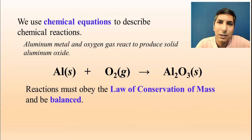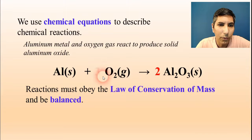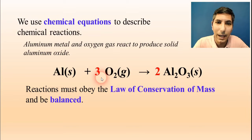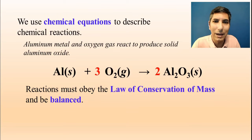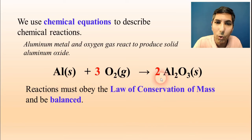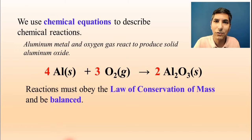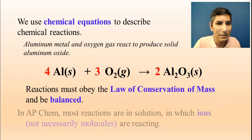We balance equations by placing coefficients in front of the substances. For oxygen, if we multiply one side by two and the other by three, we now have six oxygen atoms on both sides — the oxygen atoms are balanced. We then have to do the same for aluminum: we only have one aluminum atom on the left but four on the right (two times two), so we multiply the left aluminum by four, giving us a balanced equation. Whenever you write an equation, make sure you do that extra step and balance it.